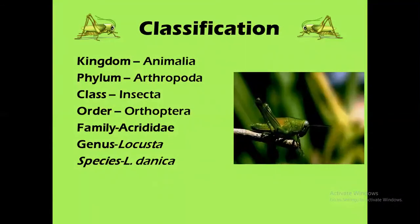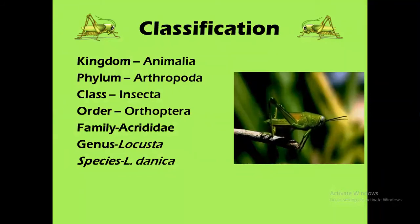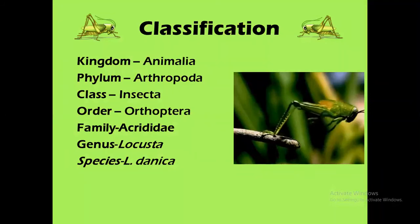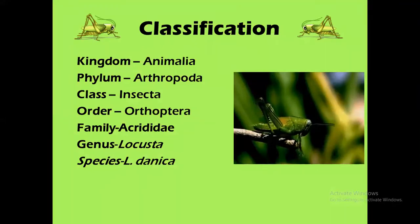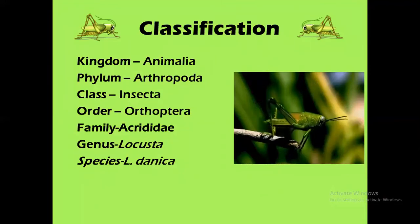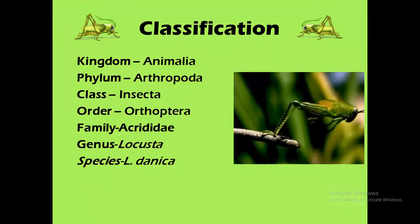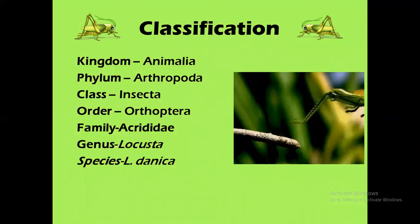Now, classification of Grasshopper: Kingdom Animalia, Phylum Arthropoda, Class Insecta, Order Orthoptera, Family Acrididae, Genus Locusta, and Species Locusta migratoria. So its scientific name is Locusta migratoria.